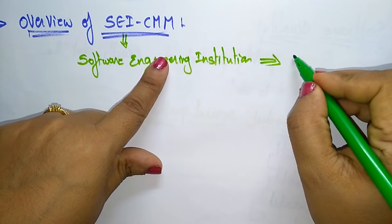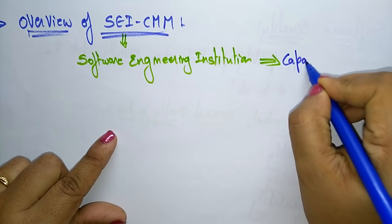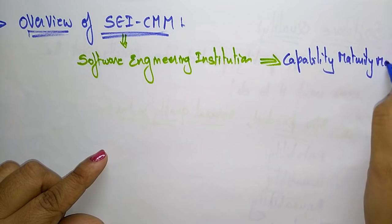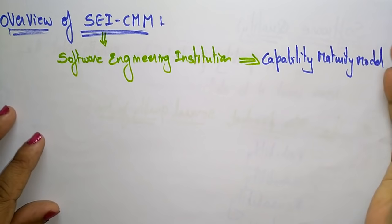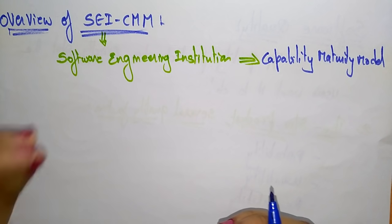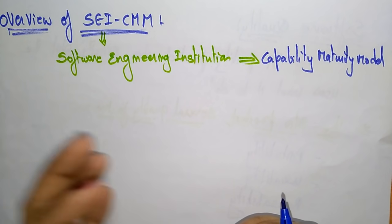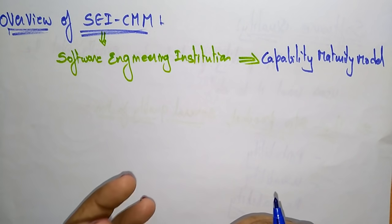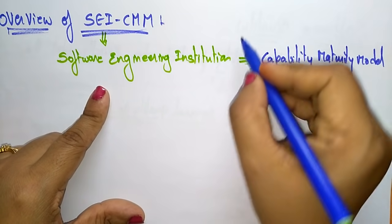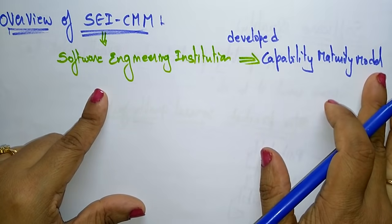CMM means Capability Maturity Model. So if your product has the capability and the maturity, then this Software Engineering Institution is going to place your company at a CMM level.